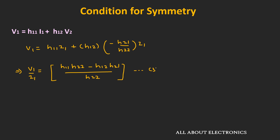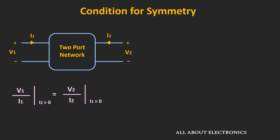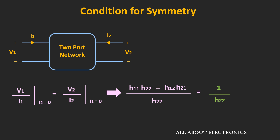To find V2/I2 with I1 equals 0, from the second expression: I2 equals H22·V2, so V2/I2 equals 1 divided by H22. For symmetry, these two ratios must be equal, which means H11·H22 minus H12·H21 equals 1, or ΔH equals 1. If this condition is satisfied, the network is a symmetrical network.